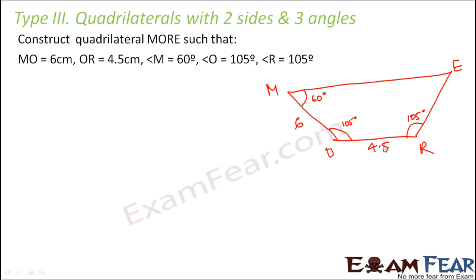How do we start drawing this quadrilateral? We start in the same way as shown in the rough sketch. We will draw OR first, because for OR we know both angles — angle R and angle O. You could also start with MO since both its angles are known too. The line you draw first becomes the base, so always choose a line whose length and both endpoint angles are known to you.